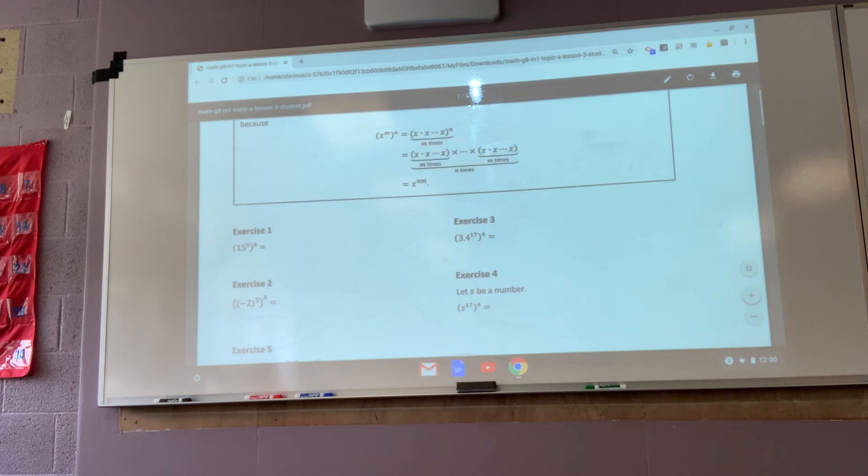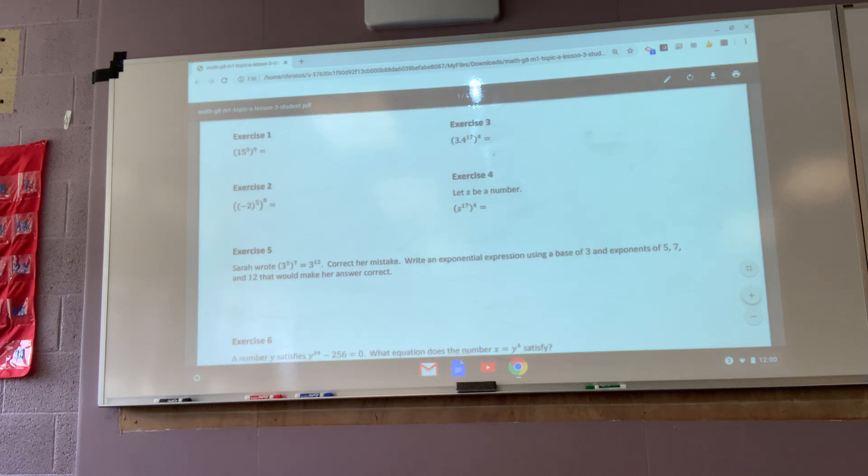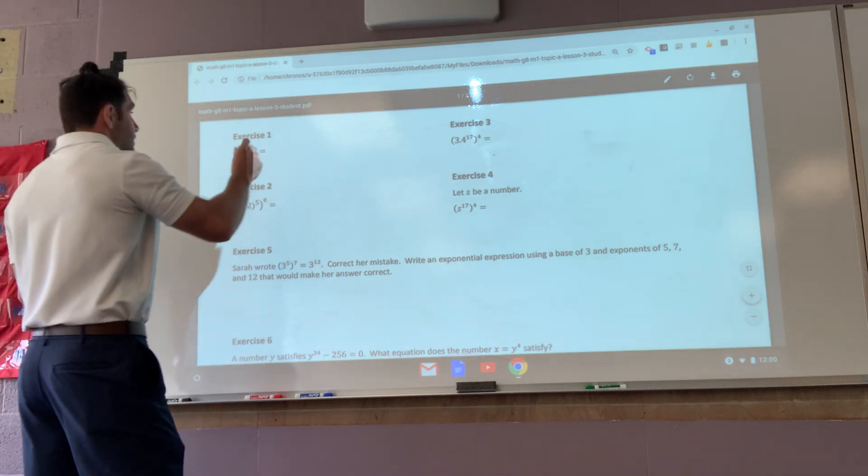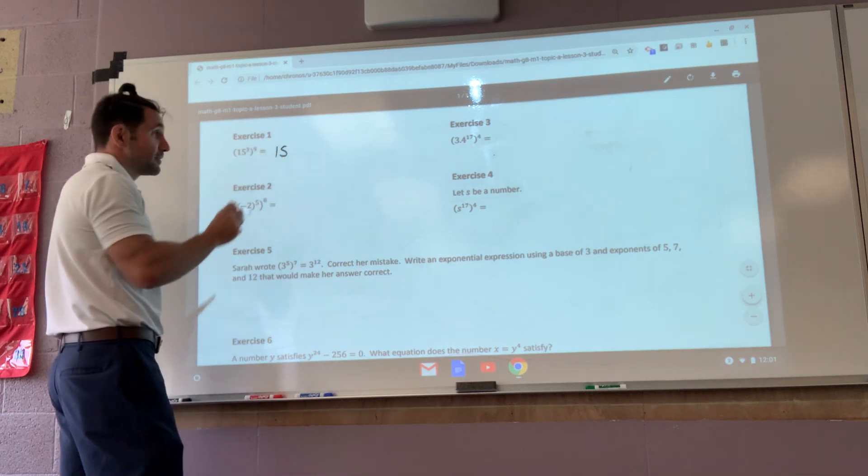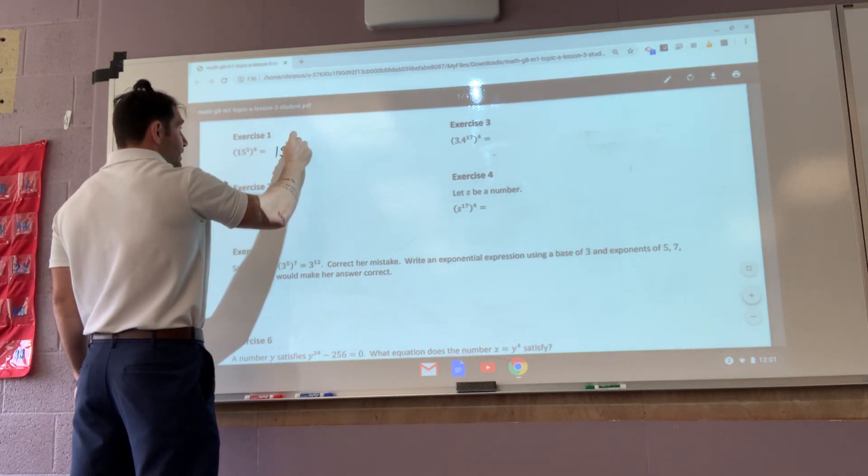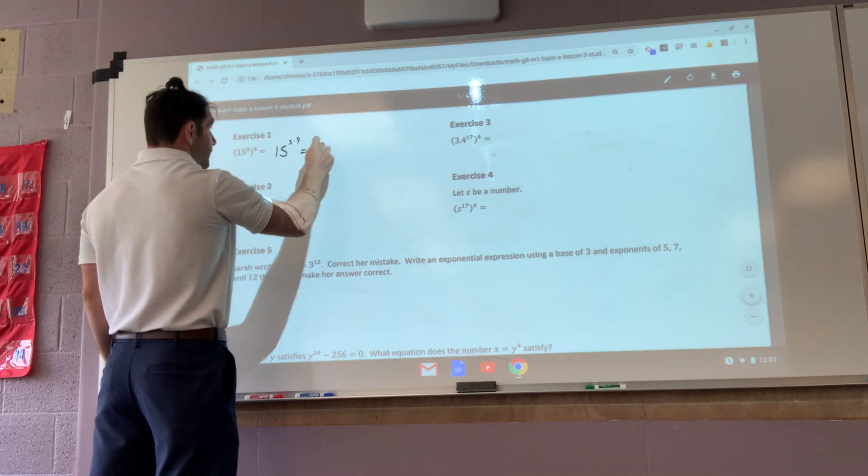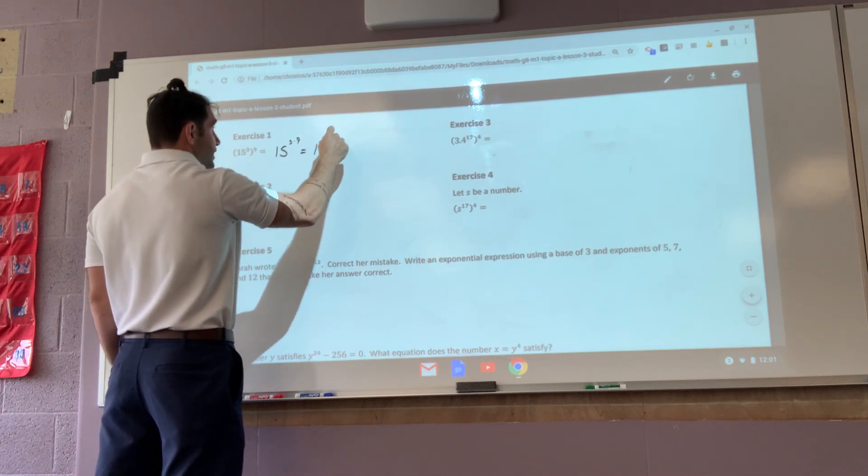Not a lot of work today. Today you're turning in your classwork. Okay? So we are going to do exercise one together, and then you're on your own. So fifteen to the third raised to the ninth really means fifteen three times nine, which is fifteen to the twenty-seventh.